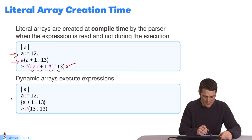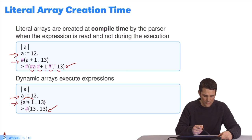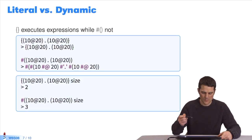I do the same thing here with a dynamic array. a equals 12, braces a plus 1, 13. And I get an array with two elements, 13 and 13. Why? Because a plus 1 was evaluated as an expression. a equals 12 plus 1, 13. Each expression separated by a dot was evaluated before creating an array.